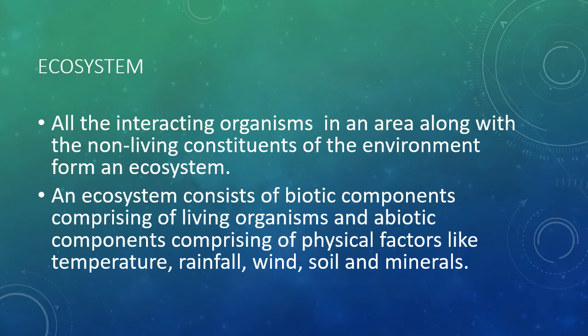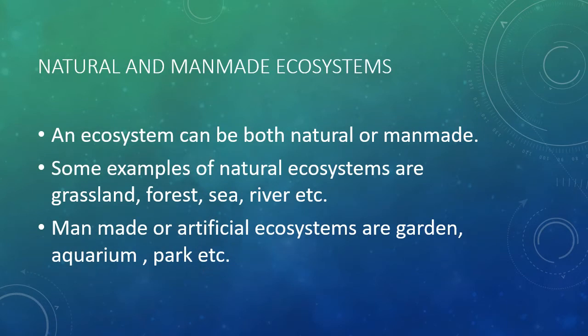Ecosystem: All the interacting organisms in an area along with the non-living constituents of the environment form an ecosystem. An ecosystem consists of biotic components comprising of living organisms, and abiotic components comprising of physical factors like temperature, rainfall, wind, soil and minerals. An ecosystem can be both natural or man-made. Some examples of natural ecosystems are grassland, forest, sea, river, etc.